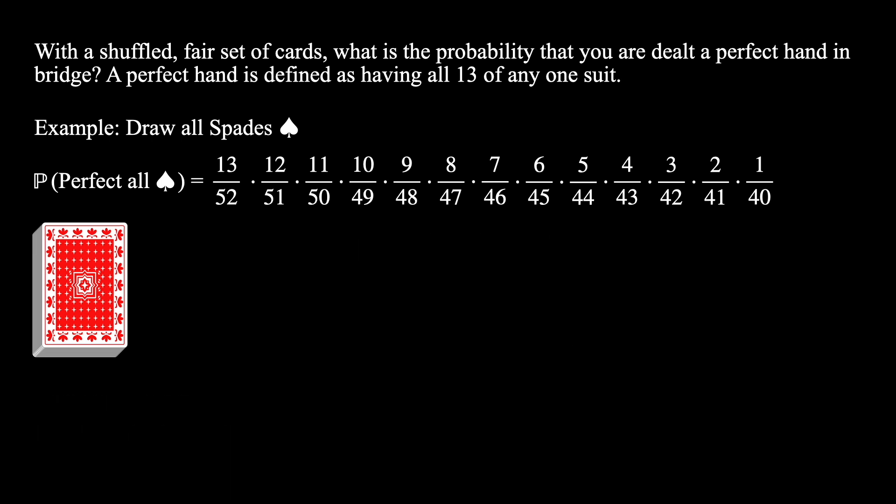We've got a very long expression over here for the perfect all spades hand. Can we work to simplify this a little bit? We can start by noticing that all the numbers in the numerator are simply the numbers from 1 to 13 and we're taking the product across all of them. This is simply the definition of 13 factorial.